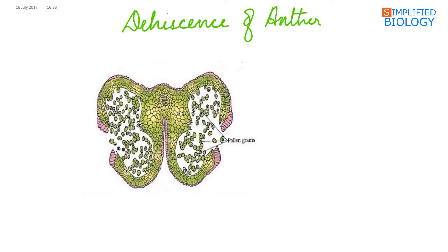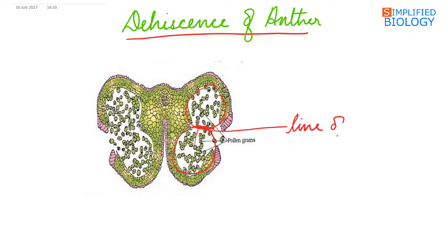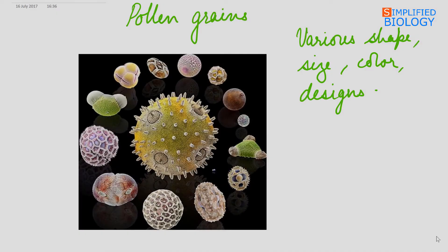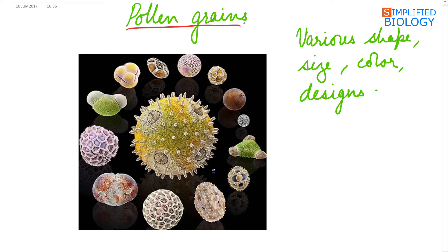Next is dehiscence of the anther. As the microsporangia mature, the wall between two adjacent sporangia breaks up, they fuse with each other, and this region forms the line of dehiscence. It is from this region that the anther opens up and the pollen grains are released. The pollen grains, as seen in pictures, are of various shapes, sizes, colors, designs, and even textures.